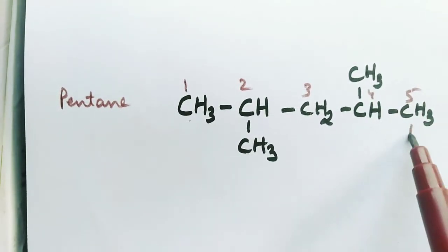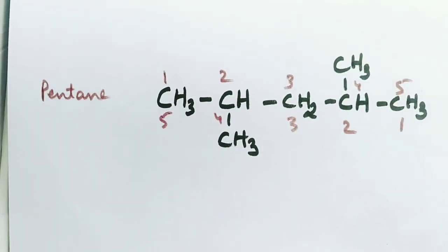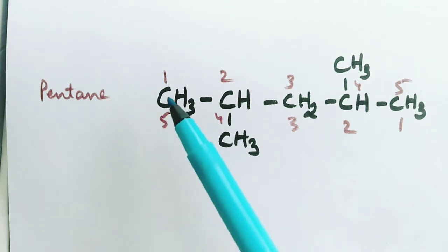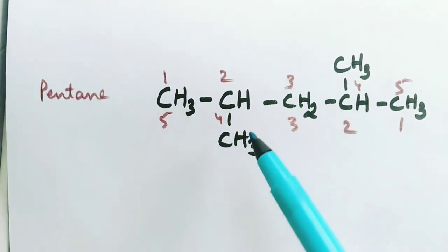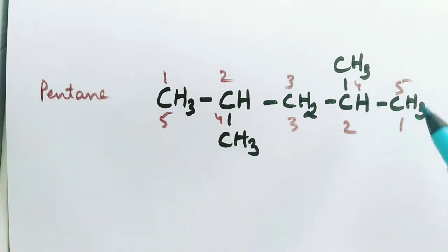If you start from here, so one, two, three, four, five - that is, if we number from left to right, then this methyl group will be at position two. And if we count from right to left, it will be at position four.